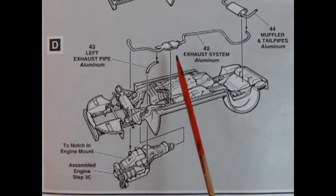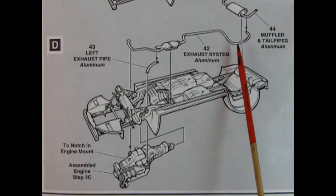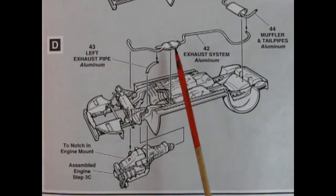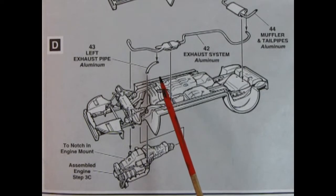Panel D is showing our exhaust system here which has three pieces. Muffler and tailpipes at the back, the exhaust system in the middle with the catalytic converter, and then an extension pipe to go to the other manifold on our engine. Then we glue our engine from the bottom up into the chassis.